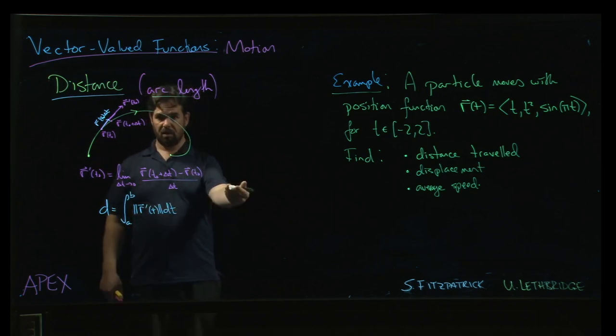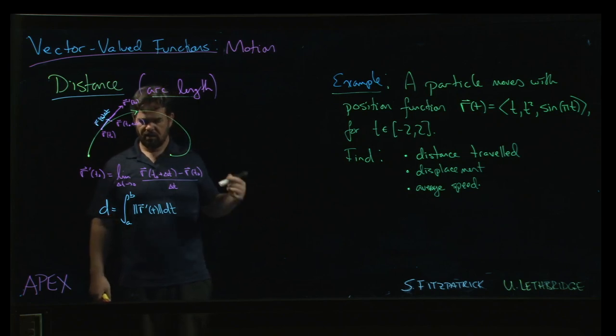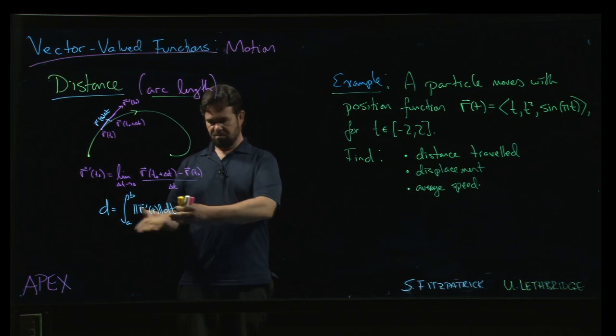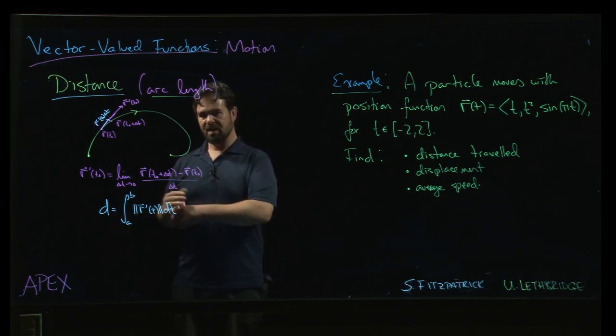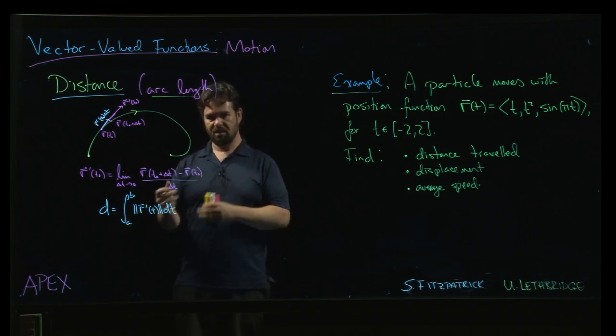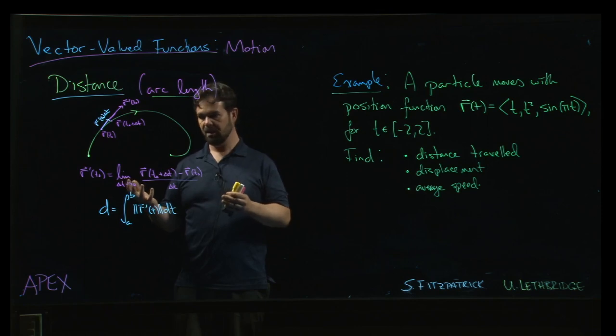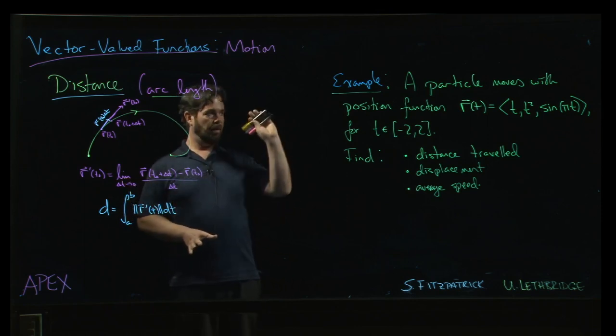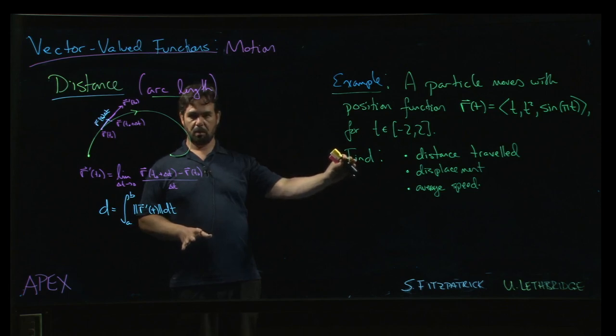And this is an arc length formula rewritten in terms of vector values. It's the same arc length formula that you saw for parametric curves. But I think this is maybe a more convenient notation. I like the vector notation here. It simplifies things forward a little bit. So that's the formula for arc length. We'll pause momentarily, and then we'll put it to use in this example right here.